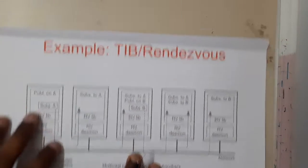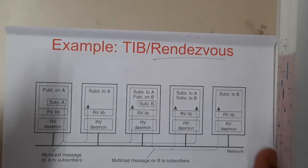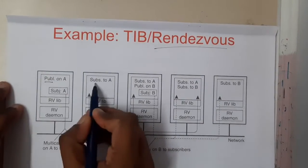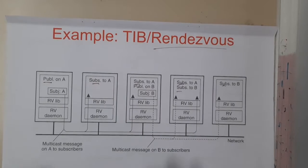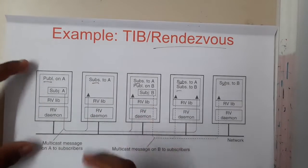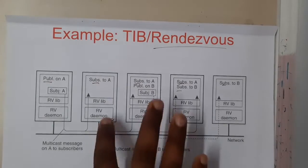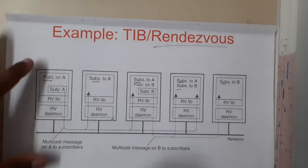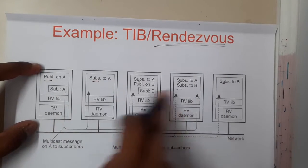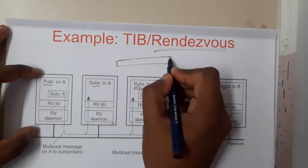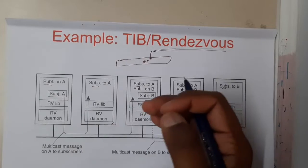Now let us go through TIBCO Rendezvous — you can pronounce it as 'Rendezvous.' This is also a subscriber-publisher diagram. Here we have one publisher and many subscribers, and some subscribers could be publishers too. Publishers publish the data, and the key component that subscribers use is nothing but RV — Rendezvous — which stores everything: whatever you are searching, every request is passed through it. Whenever a publisher publishes, based on the subscriber's prior request, it checks whether there is a match, and if so the subscriber receives the data.